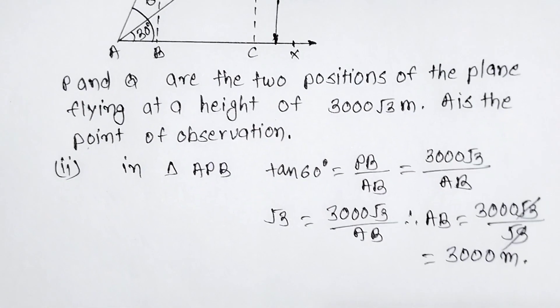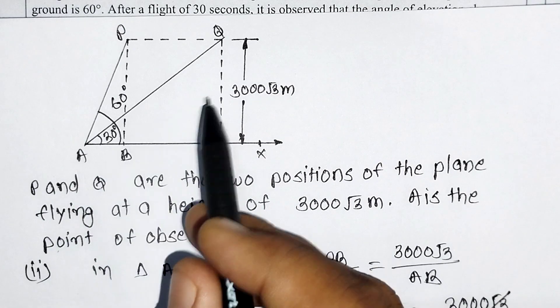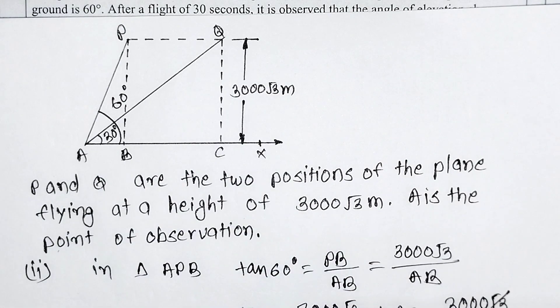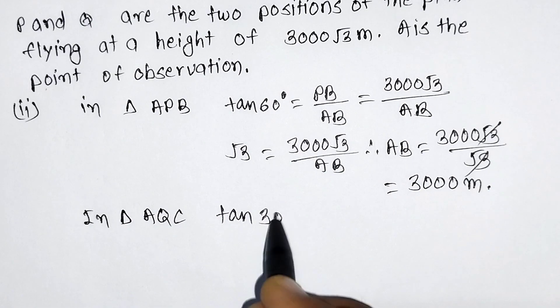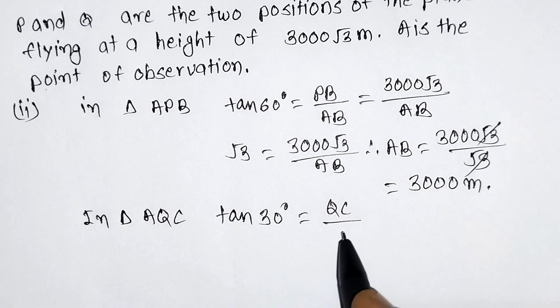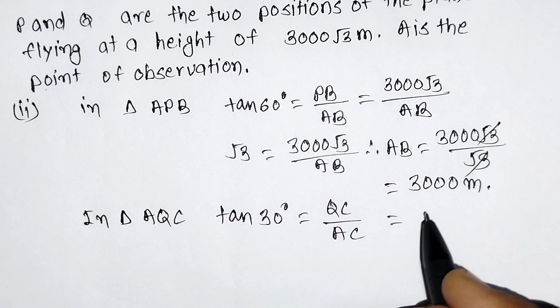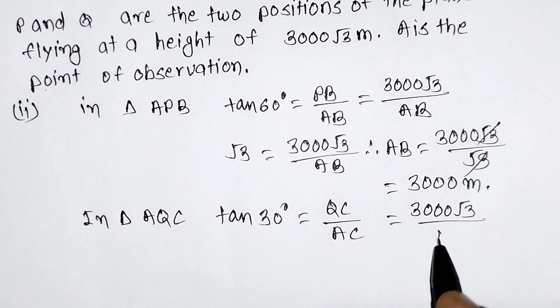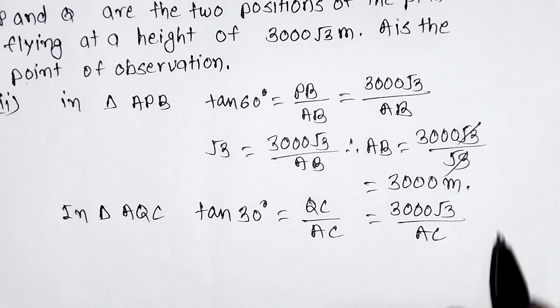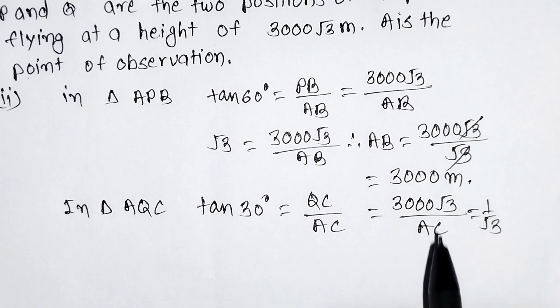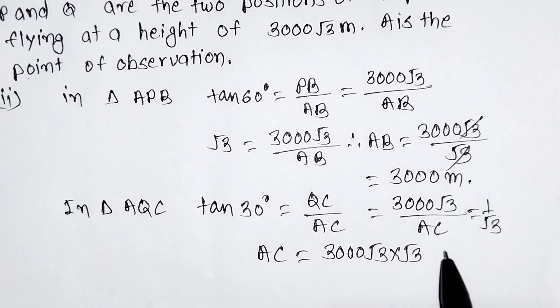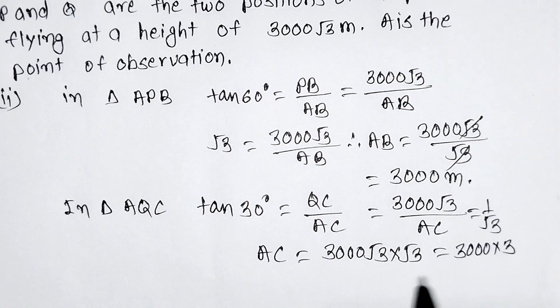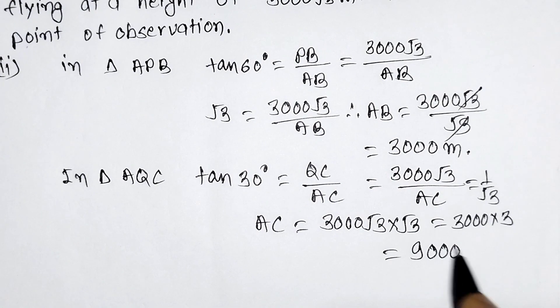Next, in triangle AQC: tan 30° = QC/AC, where QC is the height and AC is the base. So tan 30° = 3000√3 / AC. The value of tan 30° is 1/√3, so 1/√3 = 3000√3 / AC. Cross-multiplying gives AC = 3000√3 × √3 = 3000 × 3 = 9000 meters.